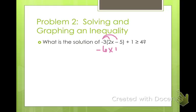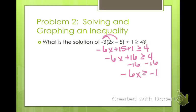So I'm going to start by distributing. So negative six x plus sixteen is greater than or equal to four. Subtract sixteen from both sides. So negative six x is greater than or equal to negative twelve.